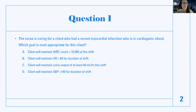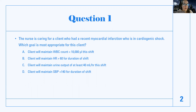The nurse is caring for a client who had a recent myocardial infarction who is in cardiogenic shock. What goal is most appropriate for this client? This question tells you what kind of shock they're in — they had an MI, which is commonly related because cardiogenic shock is a pump problem where the heart is not pumping out blood well. So for a patient with cardiogenic shock, I want their heart to pump better — I want better cardiac output. Answer choice A: client will maintain white blood cell count less than 10,000. Well, it's not an infection problem, and keeping the WBC down doesn't show cardiogenic shock is improving.